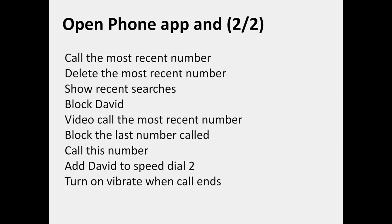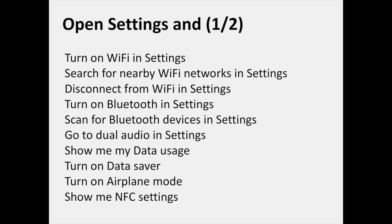In the Phone app category, you can say: show recents, show missed calls, accept, decline the call and send the text 'I am in a meeting', call 1234567 on speakerphone, block 12345678, call with speed dial number 2, open the keypad, call the most recent number, delete the most recent number, show recent searches, block David, video call the most recent number, block the last number called, add Sylvain to speed dial 2, and turn on vibrate when call ends.